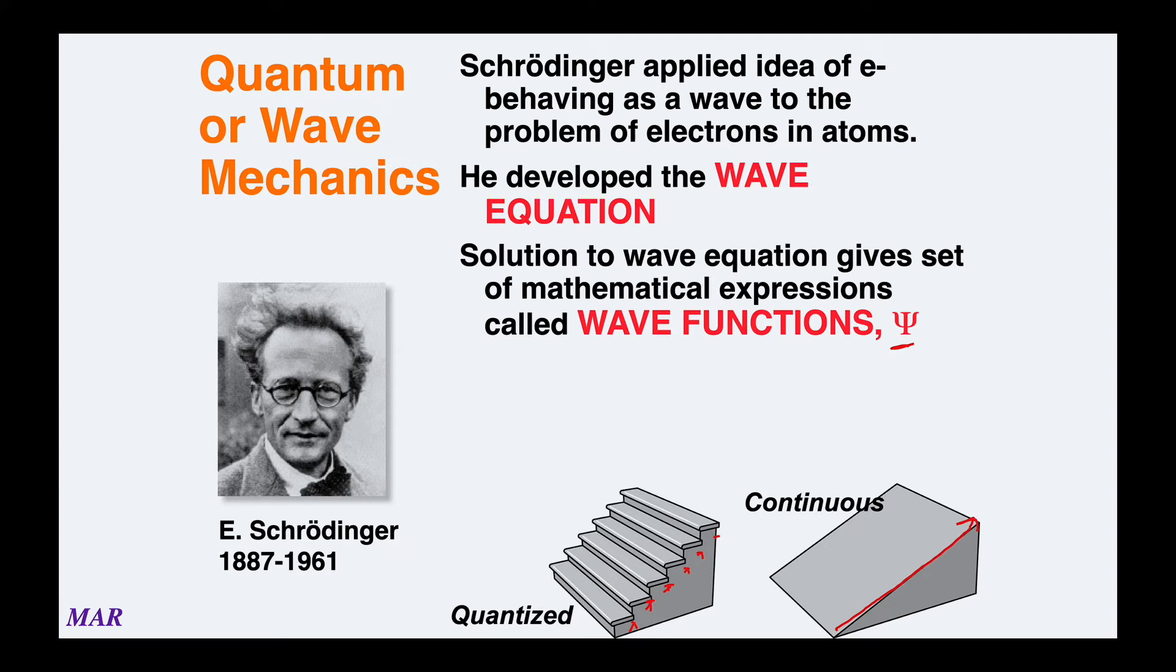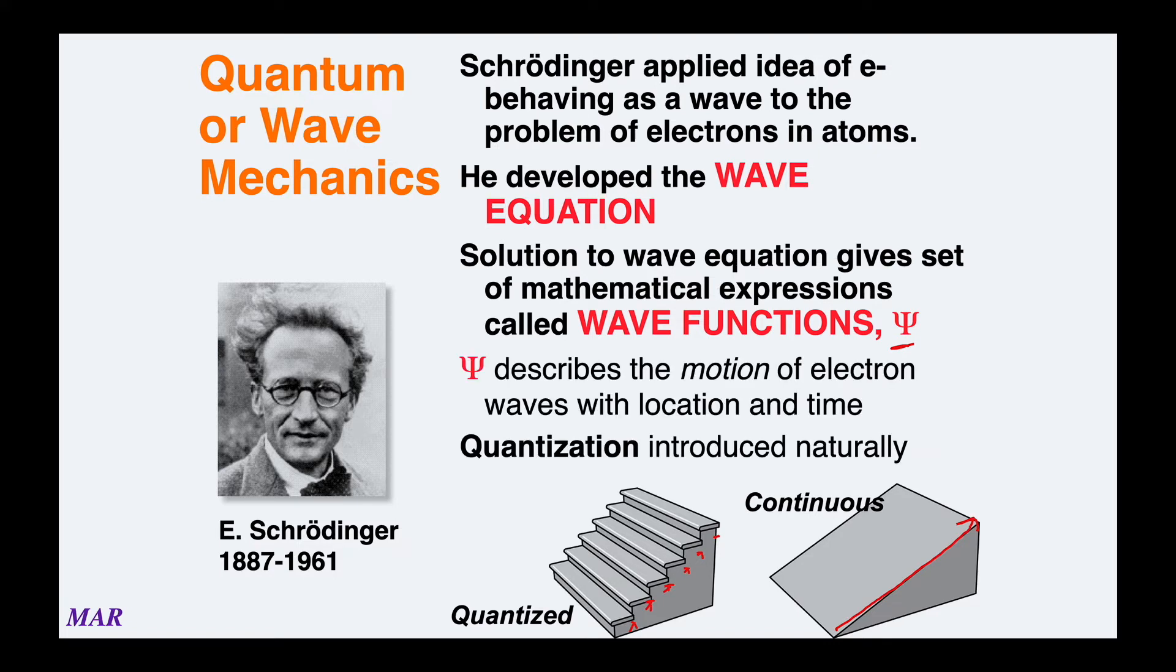Schrödinger is really interesting, but most of the stuff from here on will be the result of Schrödinger and his colleagues' work. That ψ describes the motion of electron waves with location and time, and quantization comes out naturally. The math of Schrödinger is pretty intense, and again, if we all had taken Math 254 we could talk more about these things.